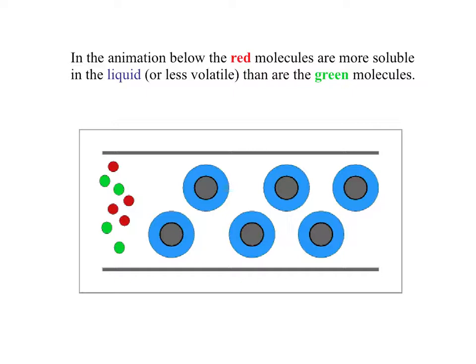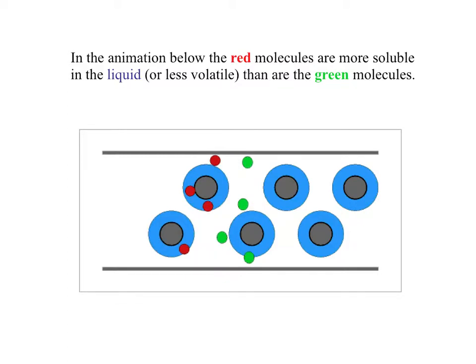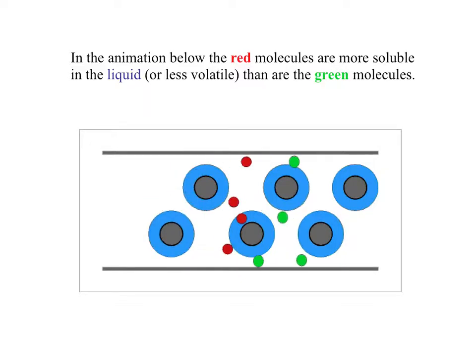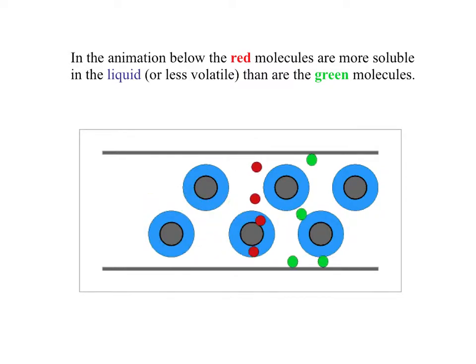the green and red colored dots represent two different types of molecules being partitioned through gas chromatography. The blue rings represent the liquid, or stationary phase, contained within the column. Watch as the molecules are being carried through the column with the carrier gas. Note how the green molecules are exiting the column before the red molecules. The red molecules represent molecules that have higher boiling points and spend less time in the gas phase. They therefore have an increased interaction with the stationary phase and move through the column more slowly.